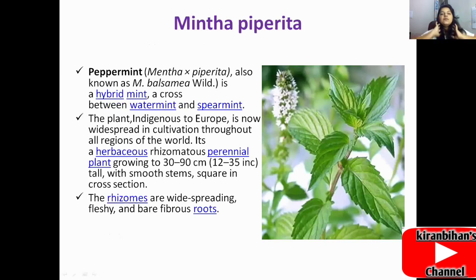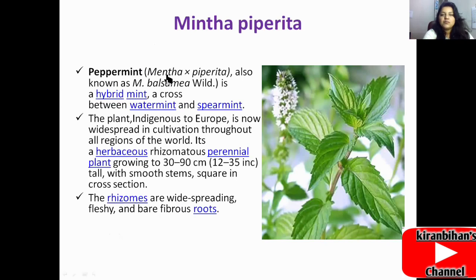The second plant is Mentha piperita. Mentha is the genus and piperita is the species. Peppermint, also known as Mentha piperita or balsamea wild, is a hybrid mint — a cross between water mint and spearmint. The plant is indigenous to Europe but is now widespread in cultivation throughout all regions of the world. It is a herbaceous rhizomatous perennial plant growing 30 to 90 centimeters tall, with smooth stems that are square in cross section.